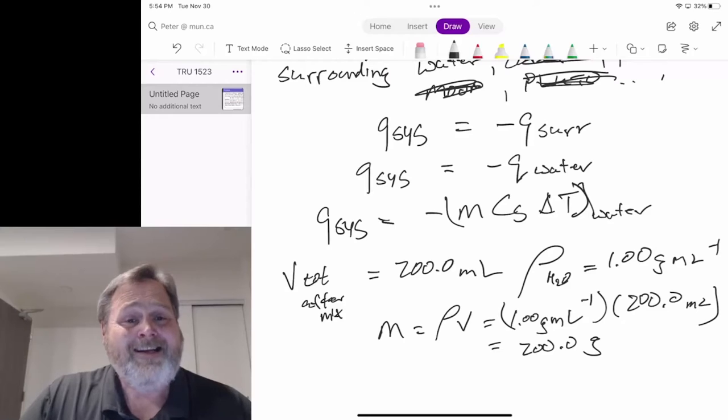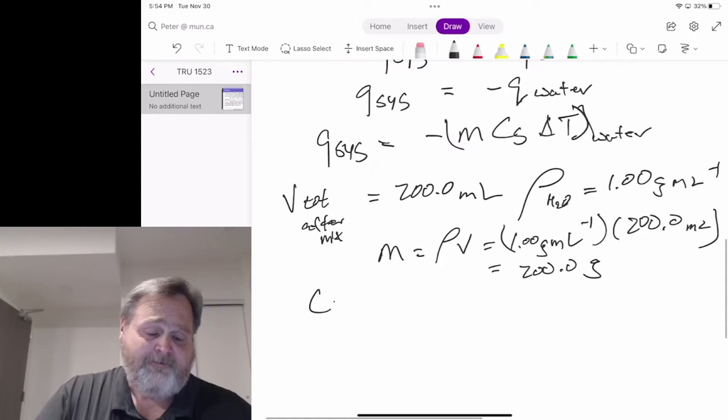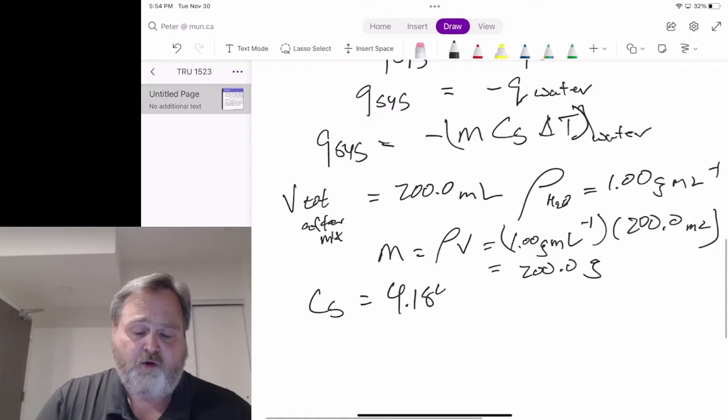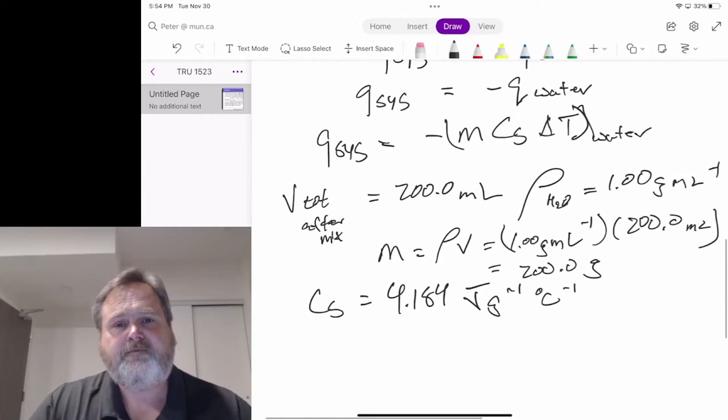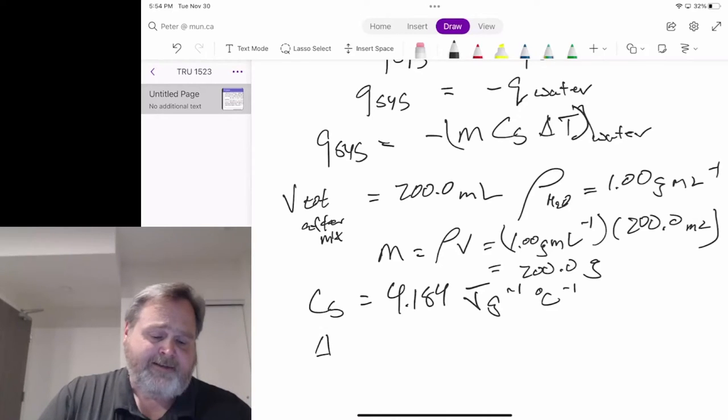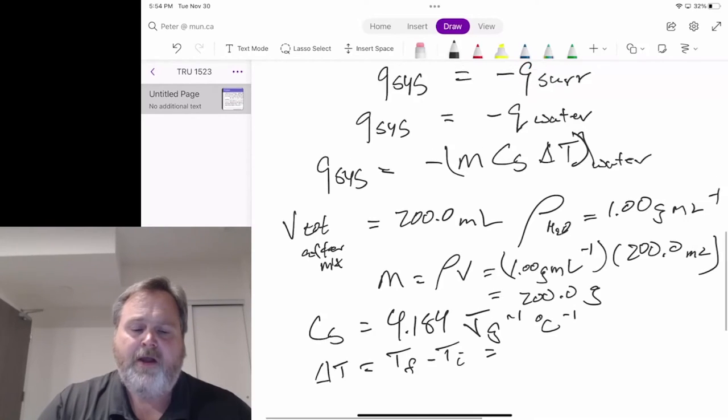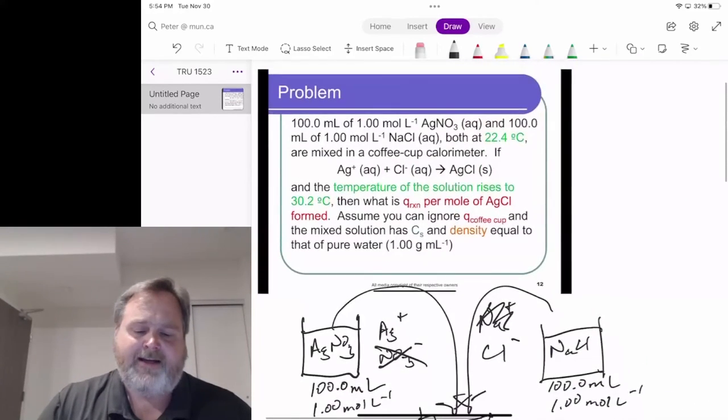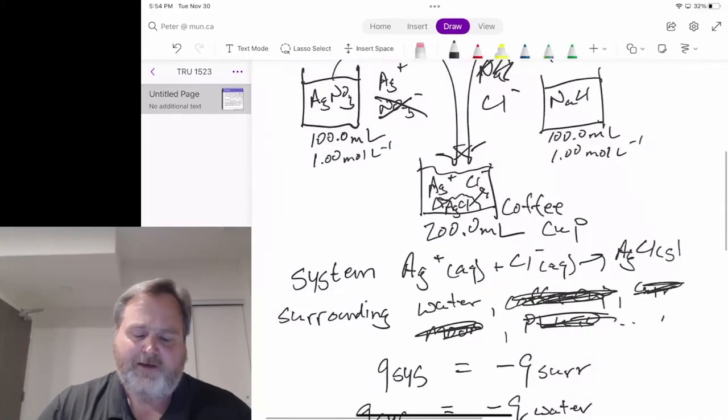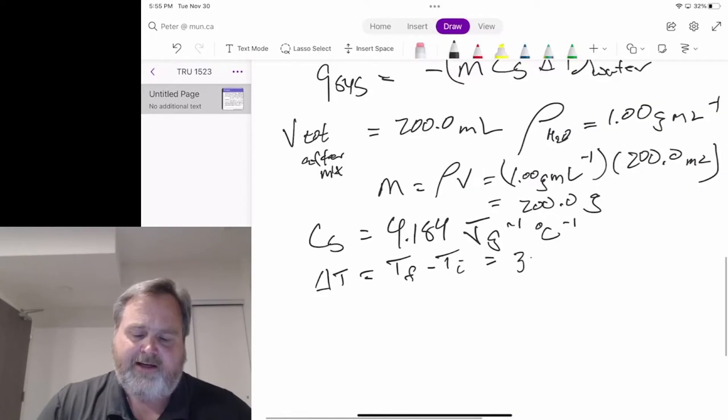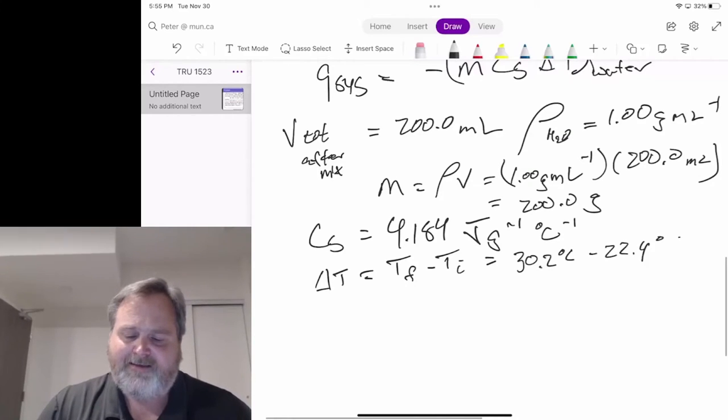We see the specific heat capacity in this problem. We know specific heat capacity for water is 4.184 joules per gram per degree Celsius. Why don't we calculate a temperature change? T_f minus T_i. This is the temperature change for water. We go from 22.4 to 30.2. That's 30.2 degrees Celsius minus 22.4 degrees Celsius. That's 7.8 degrees Celsius.